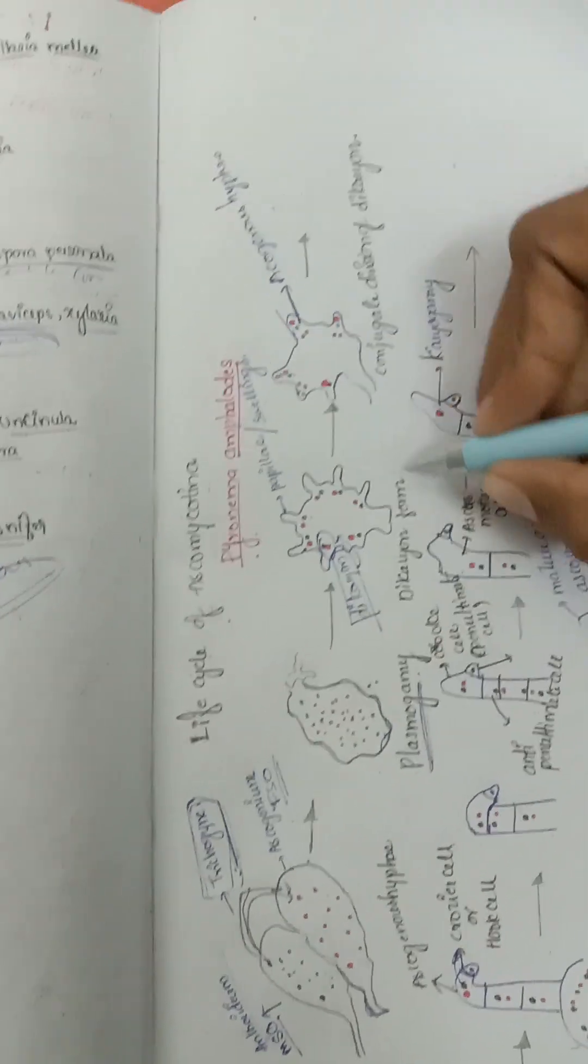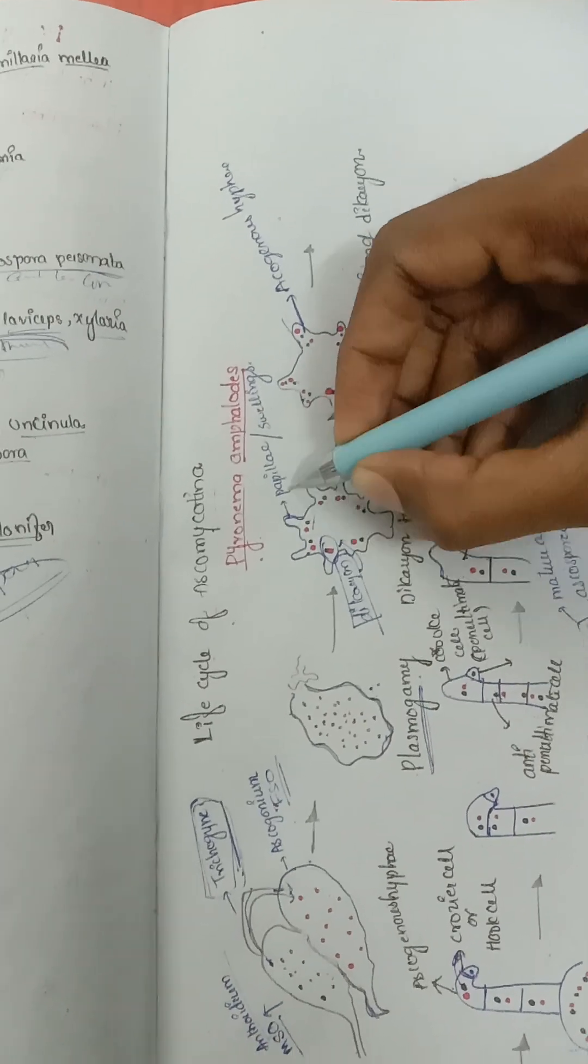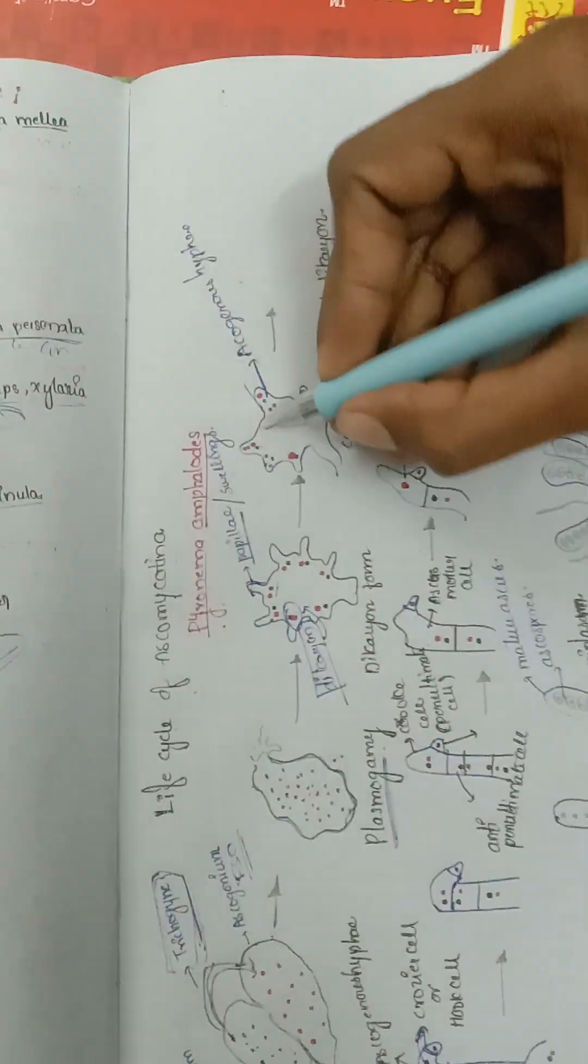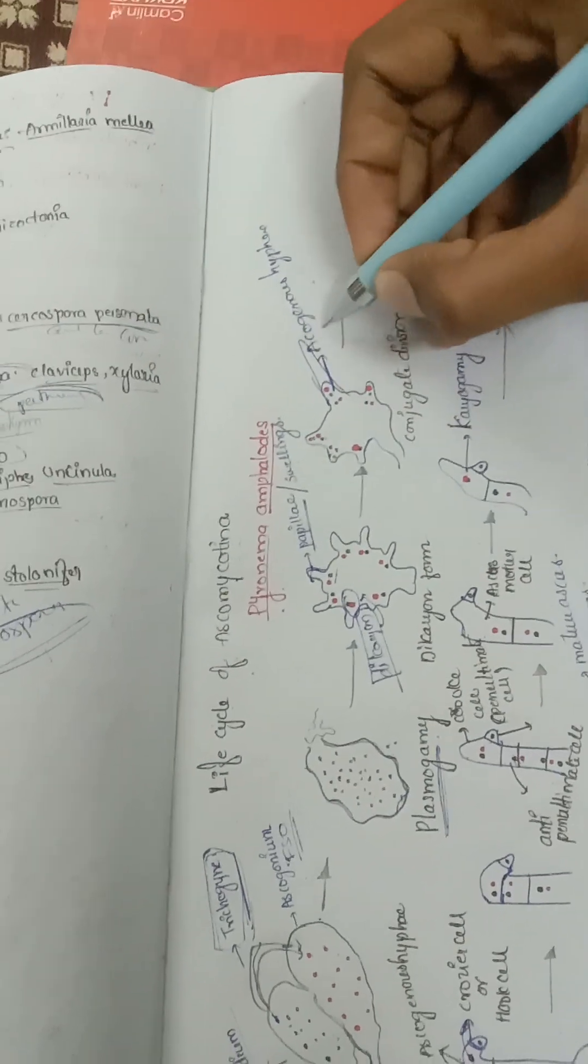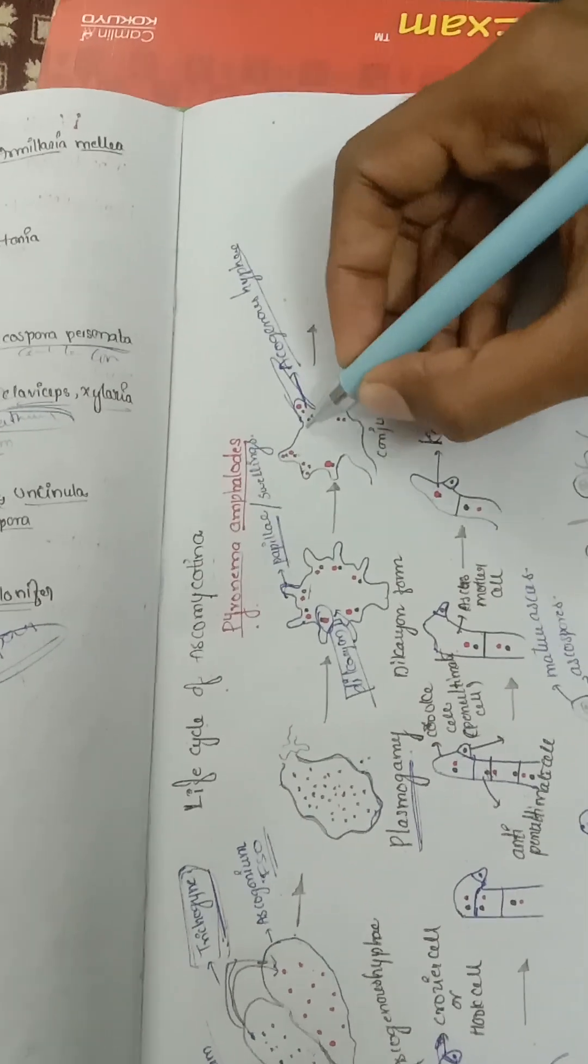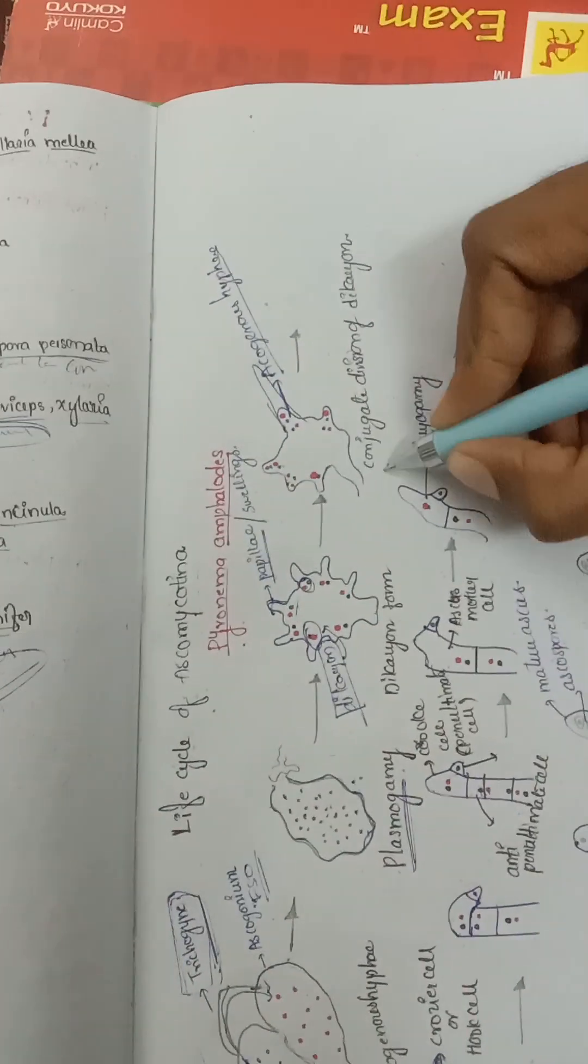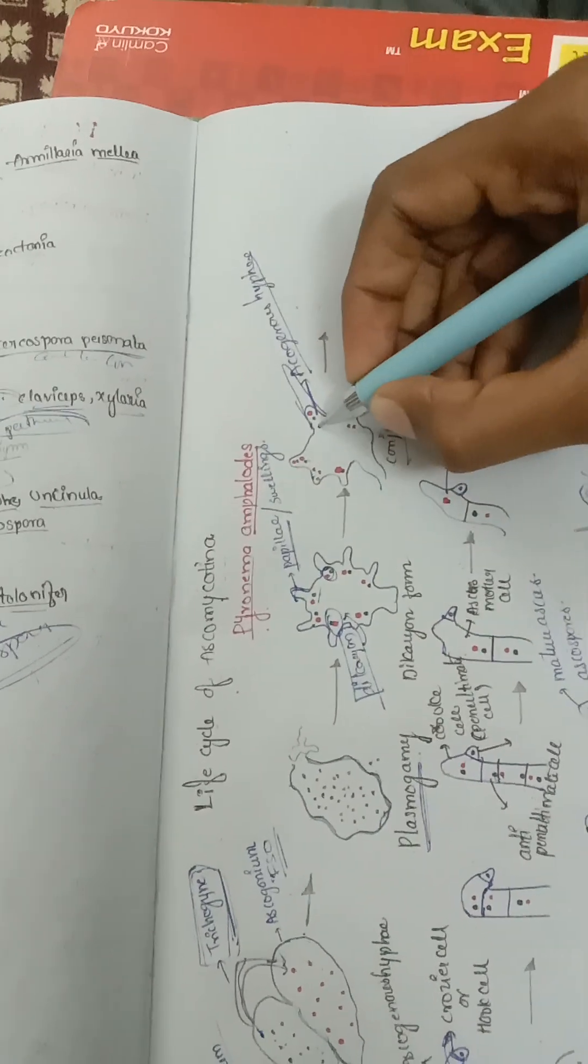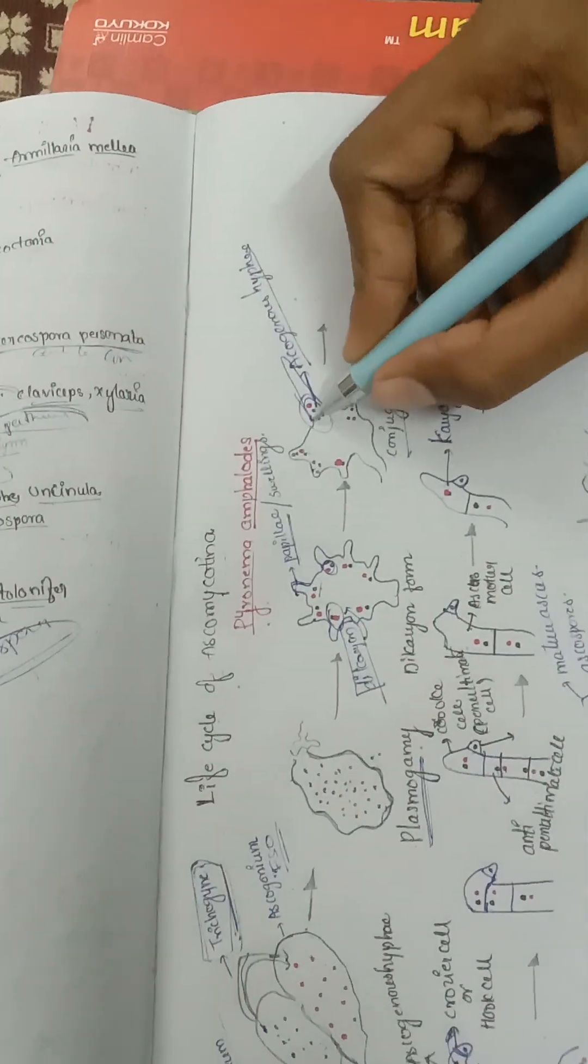The dikaryon is formed, and opposite to it, swellings or a papilla arise in the ascogonium. Then this papilla elongates to produce the ascogenous hyphae, and this dikaryon undergoes conjugate division or mitotic division to produce another two nuclei.